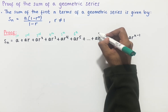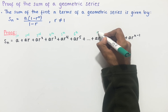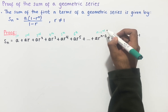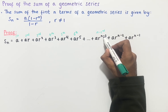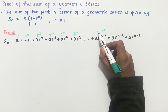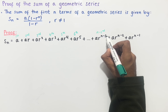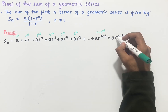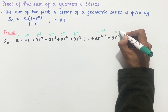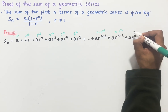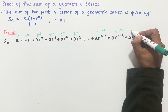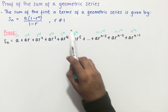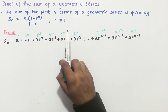...then this must be the (n minus 2)th term, because if we add 1 to n minus 3 we get n minus 3 plus 1, which is n minus 2. Likewise this is the (n minus 1)th term, and then finally we have the nth term. We know that there are n terms in total for this geometric series.